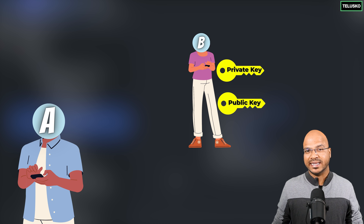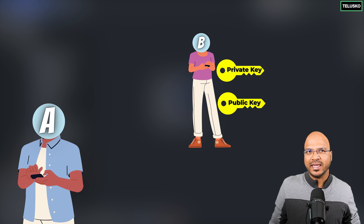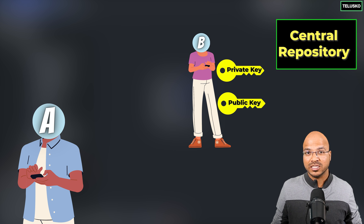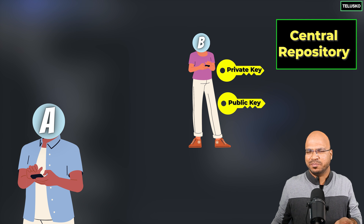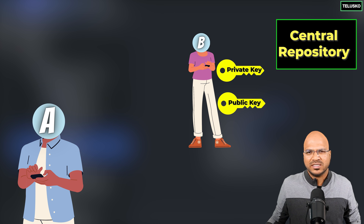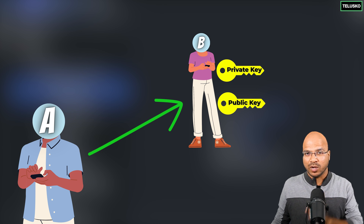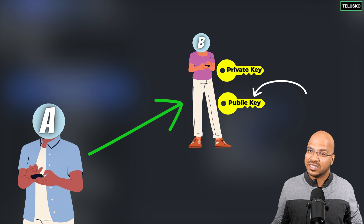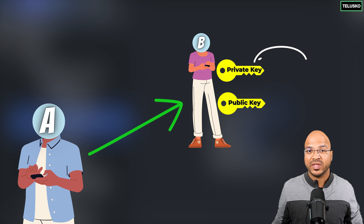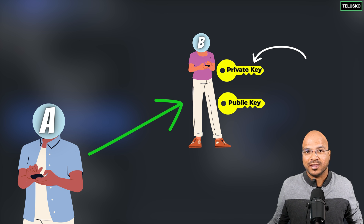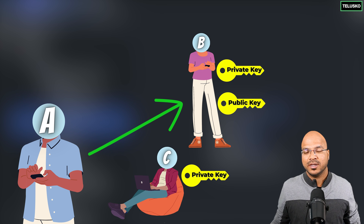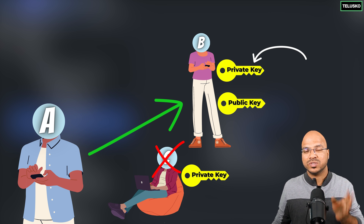Let's say B has a public key and private key, and A wants to send data. A cannot use B's private key since only B knows it, but the public key is known by everyone — stored in a central repository. So A uses B's public key to encrypt. When B receives the message, B decrypts it with its own private key, and only B can do that. If C comes in between and tries to decrypt with C's private key, it won't work — it can only be decrypted with B's private key. That's how asymmetric cryptography works.